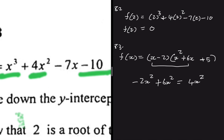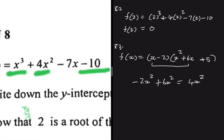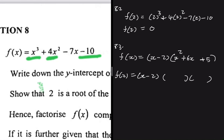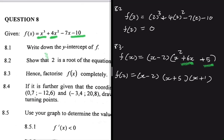So this is how you factorize a cubic function. But the question says to factorize it completely, so we also need to factorize the quadratic. f(x) equals (x-2) multiplied by two brackets. We're looking for two numbers that multiply to give 5 and add to give 6 — that's plus 5 and plus 1. So f(x) = (x-2)(x+5)(x+1). Just like that we have factorized our cubic function completely.